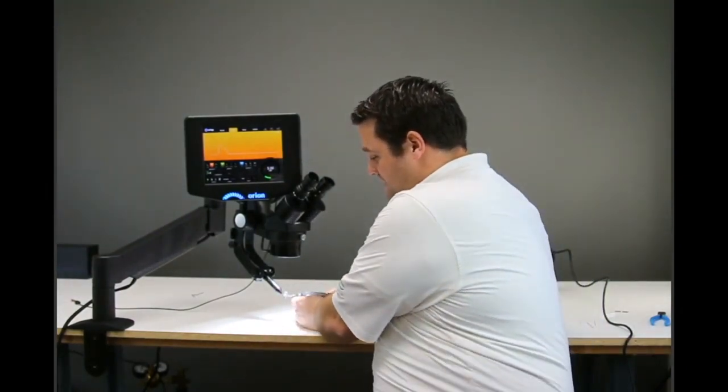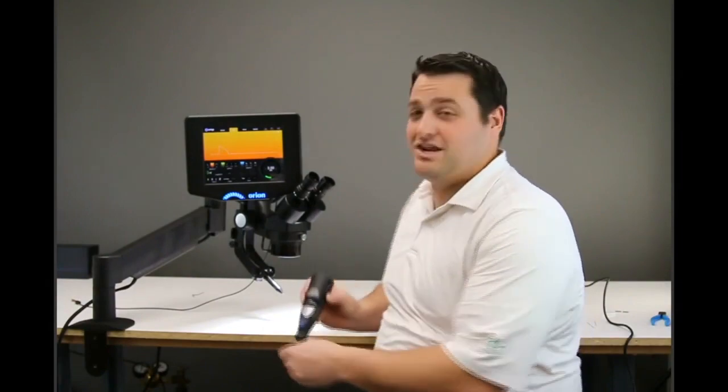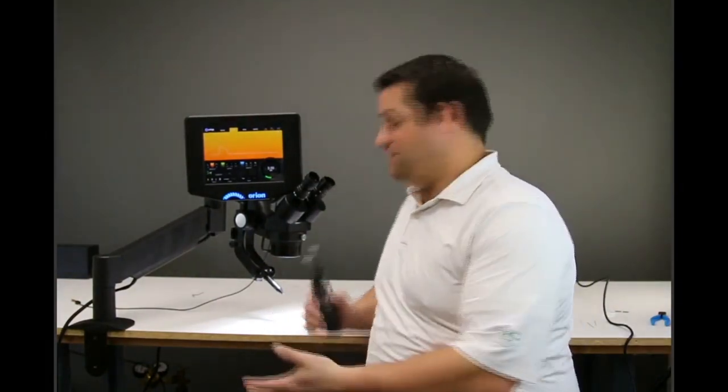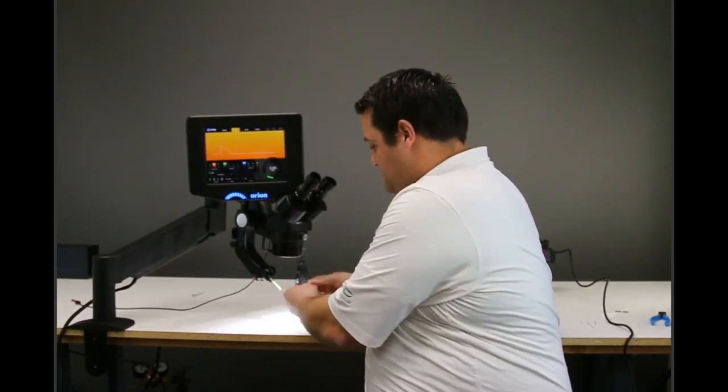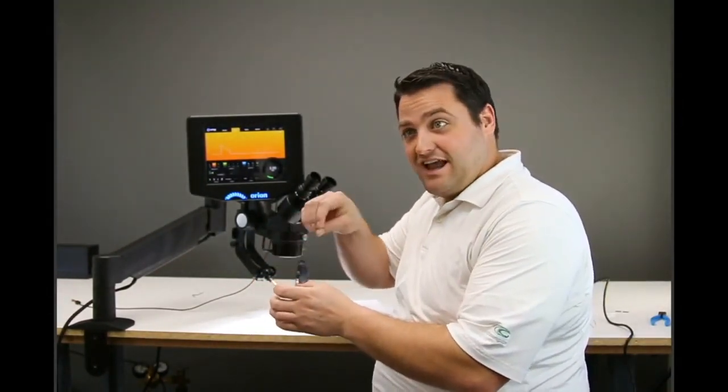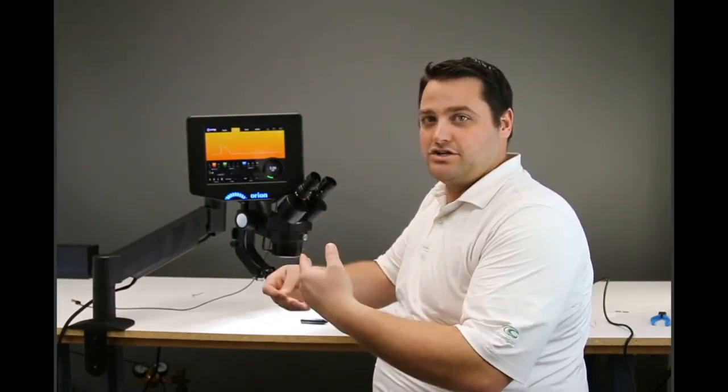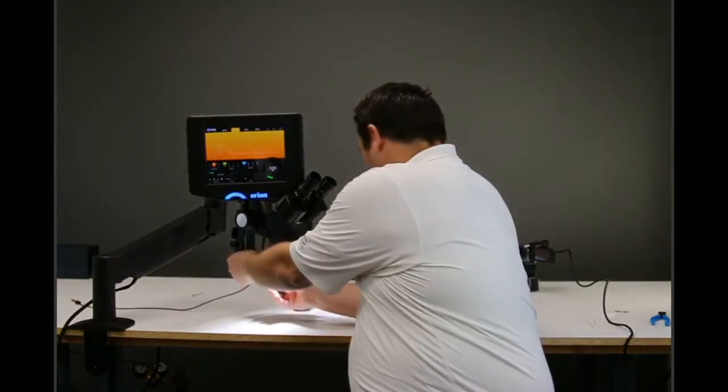I get people who tend to want to try and take their dremel and try and sharpen it while it's installed. I've had that question a bunch. It doesn't work. You absolutely have to pull this electrode out and sharpen it. The most important part is obviously that we can actually get our hand and rotate that and get a good shaped cone.